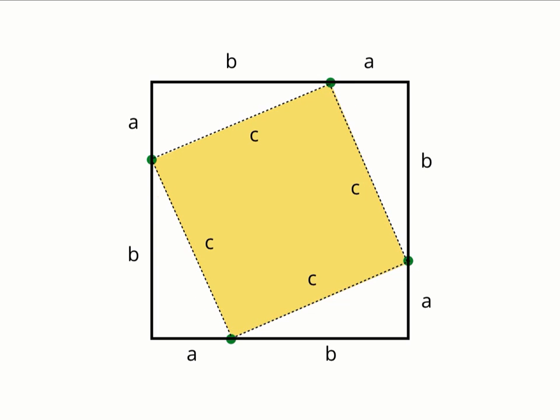Recall what the Pythagorean theorem says: the sum of the squares of the side lengths of a right triangle is equal to the square of its hypotenuse.